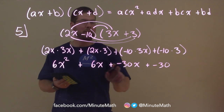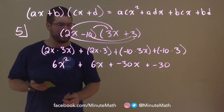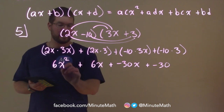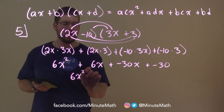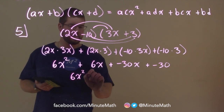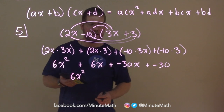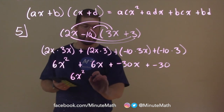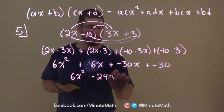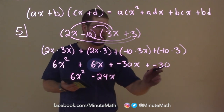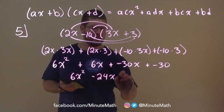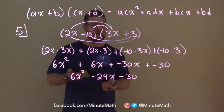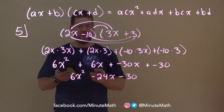Now we're going to combine our like terms. 6X squared is by itself — no like term there. Plus 6X plus negative 30X is negative 24X. And then we have minus 30. Bring that down. Now we've combined our like terms and we have our final answer.